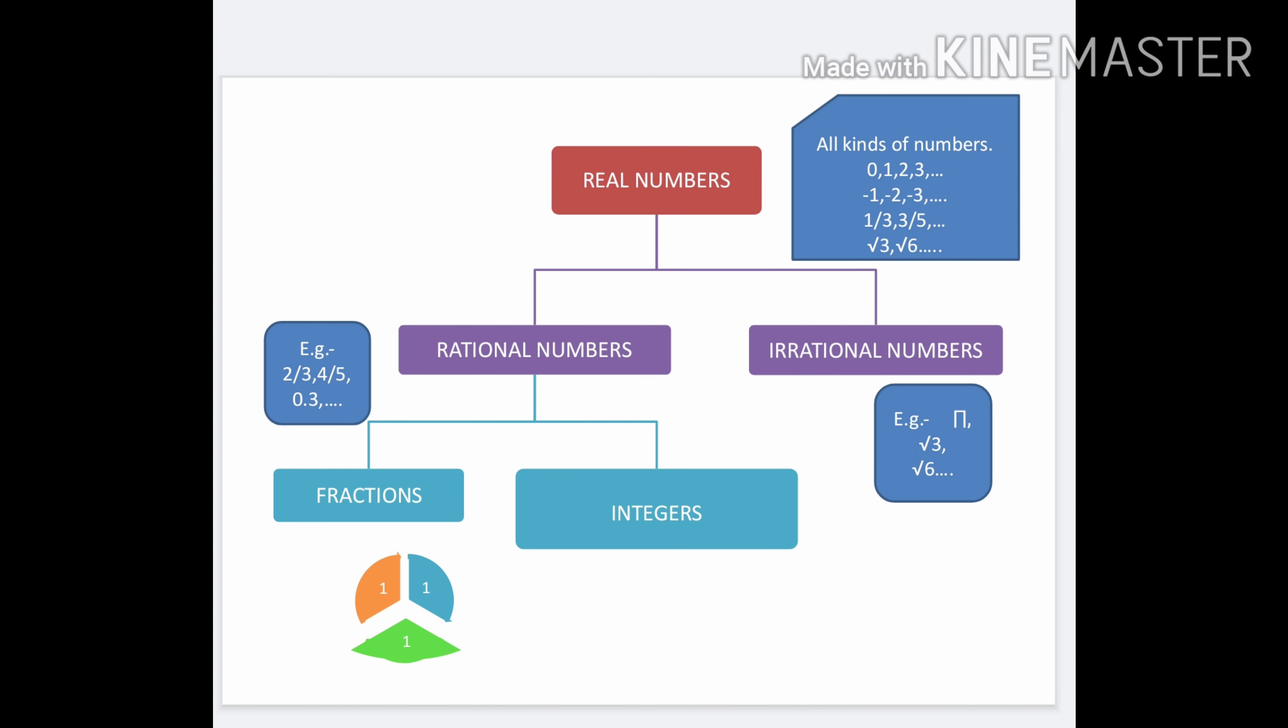Real numbers are classified into two types: one is rational number, second is irrational number.